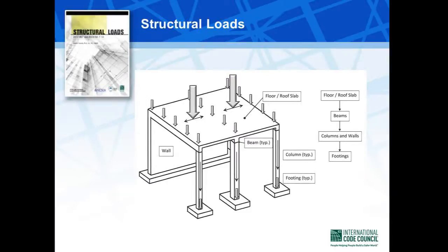New to this edition of the book is Chapter 8, which covers load paths. It is very important to understand the paths that gravity and lateral loads take through a structure. Illustrated here are the gravity load paths for a conventional structure with slabs, beams, columns, walls, and footings.